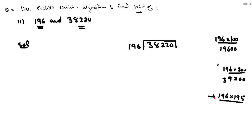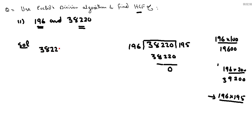When we solve this, we get 38220 — this is a complete division. Now 196 multiplied by 195 gives us 38220, and the remainder is zero. We write this as: dividend 38220 equals divisor 196 multiplied by quotient 195, and the remainder is zero.